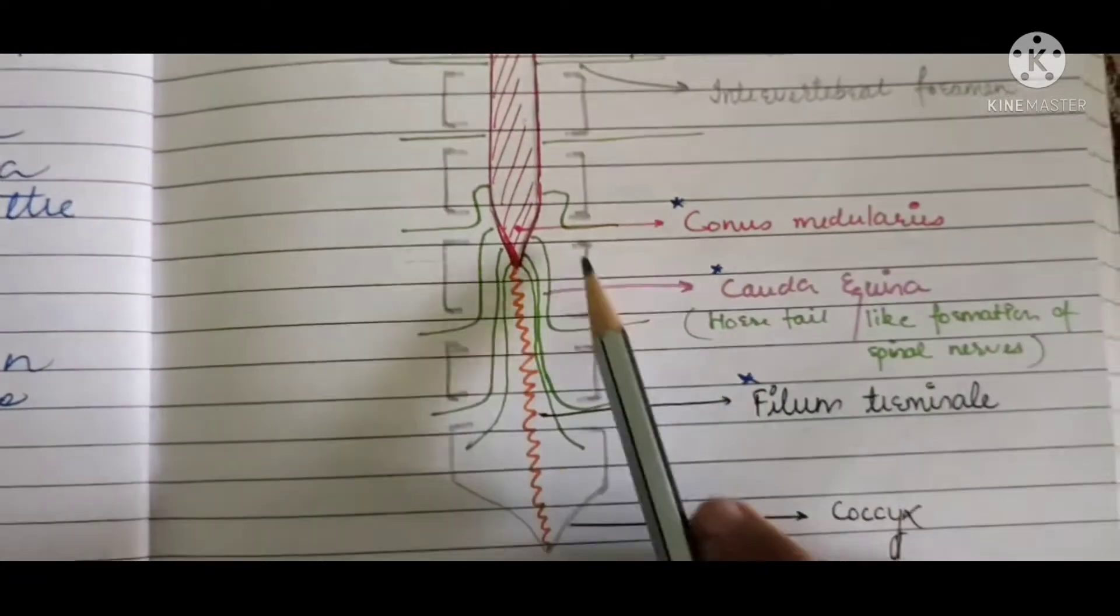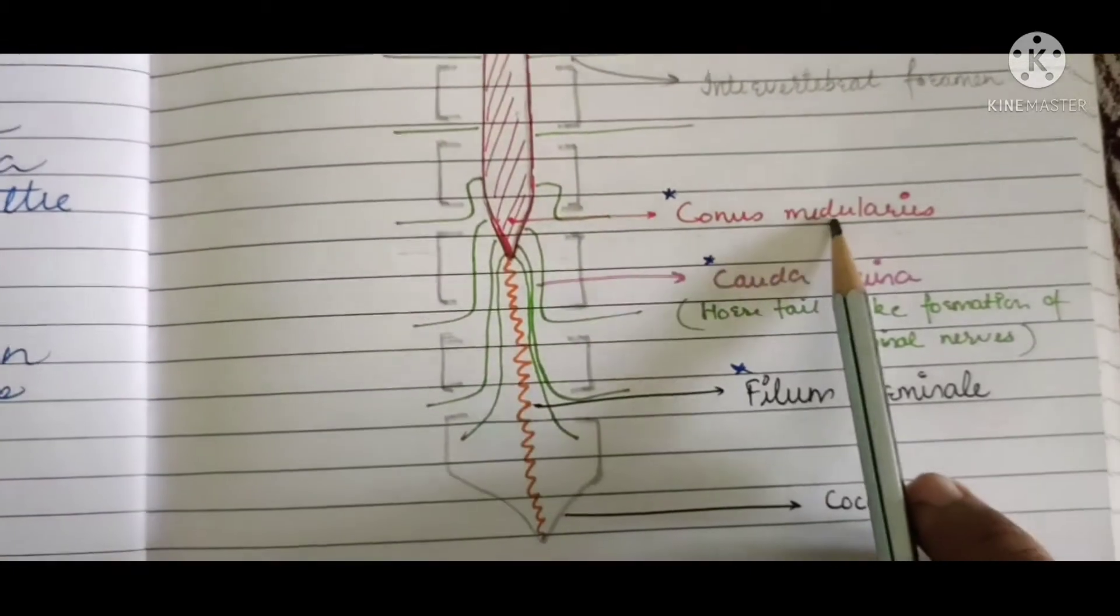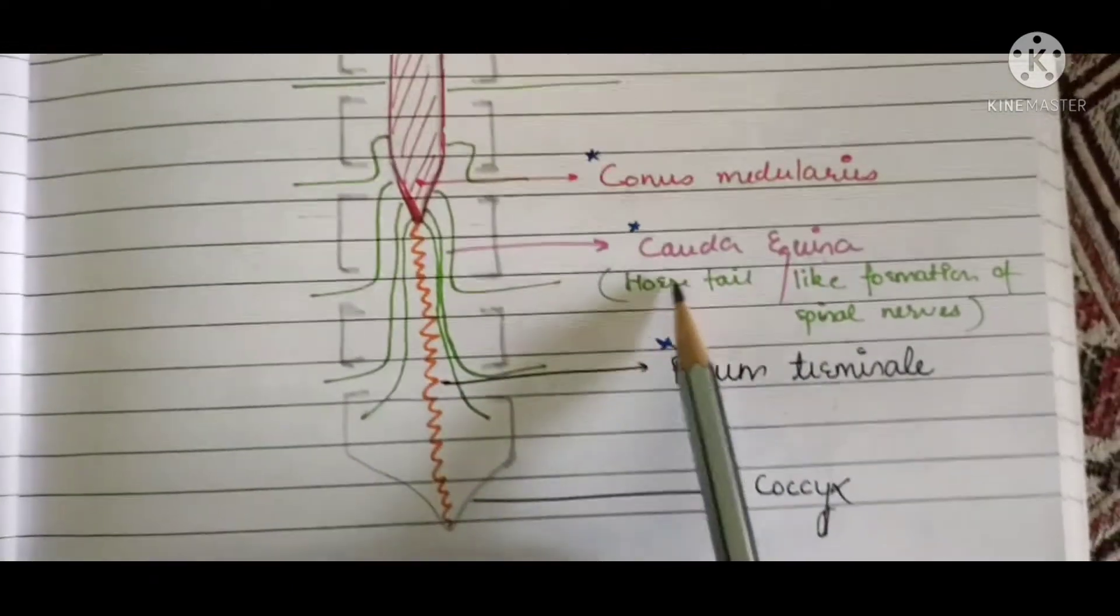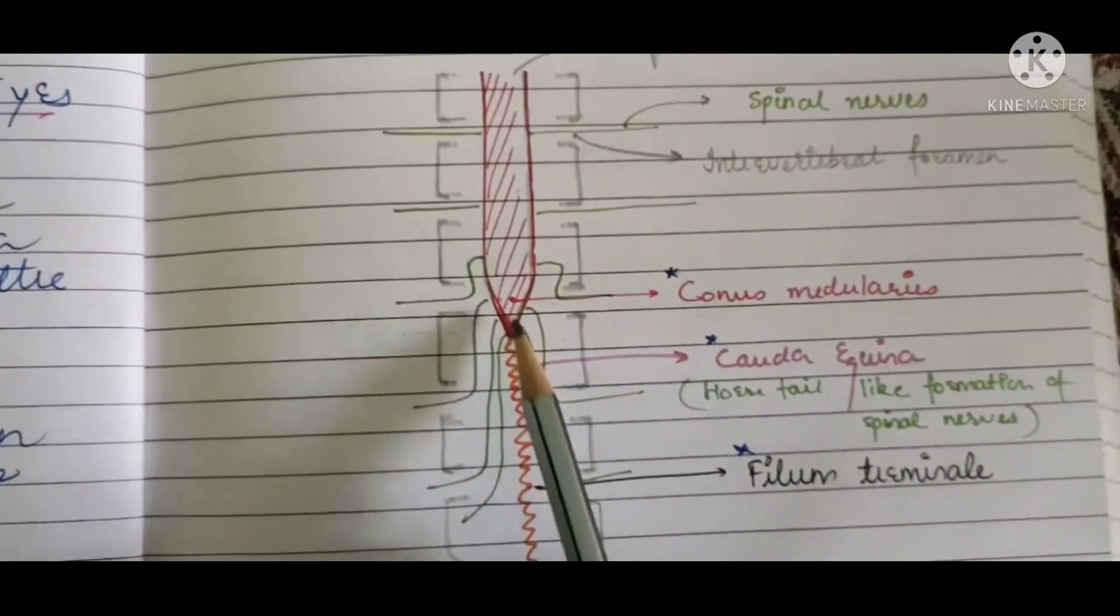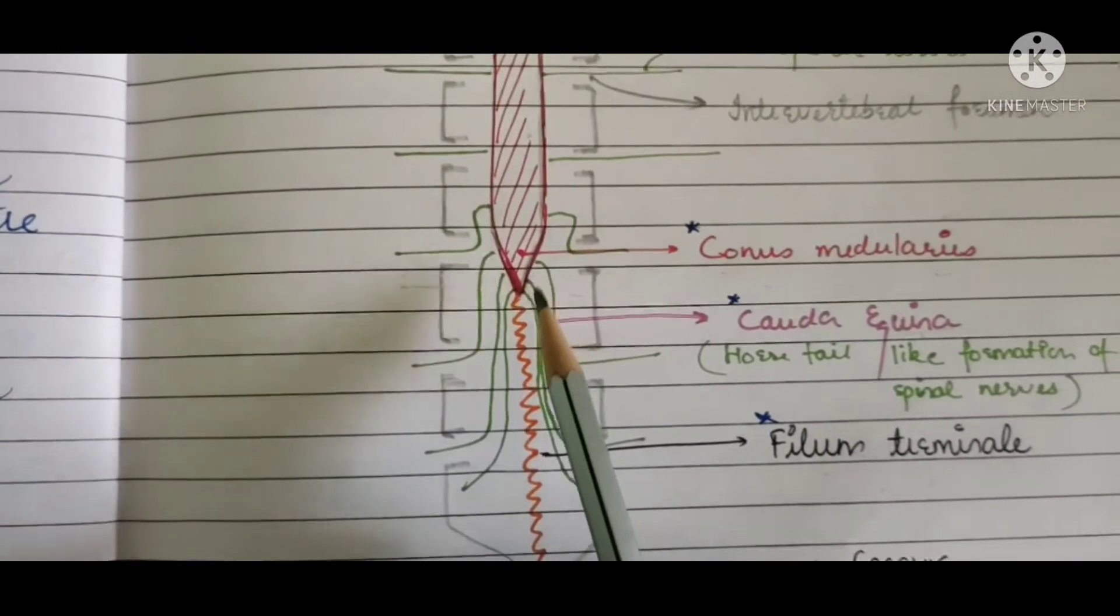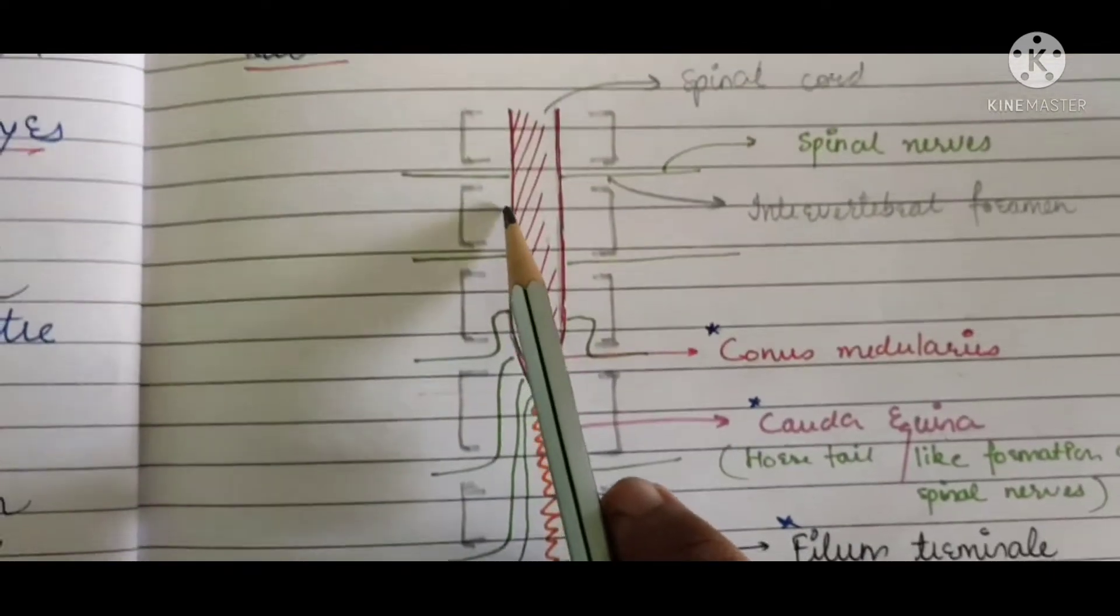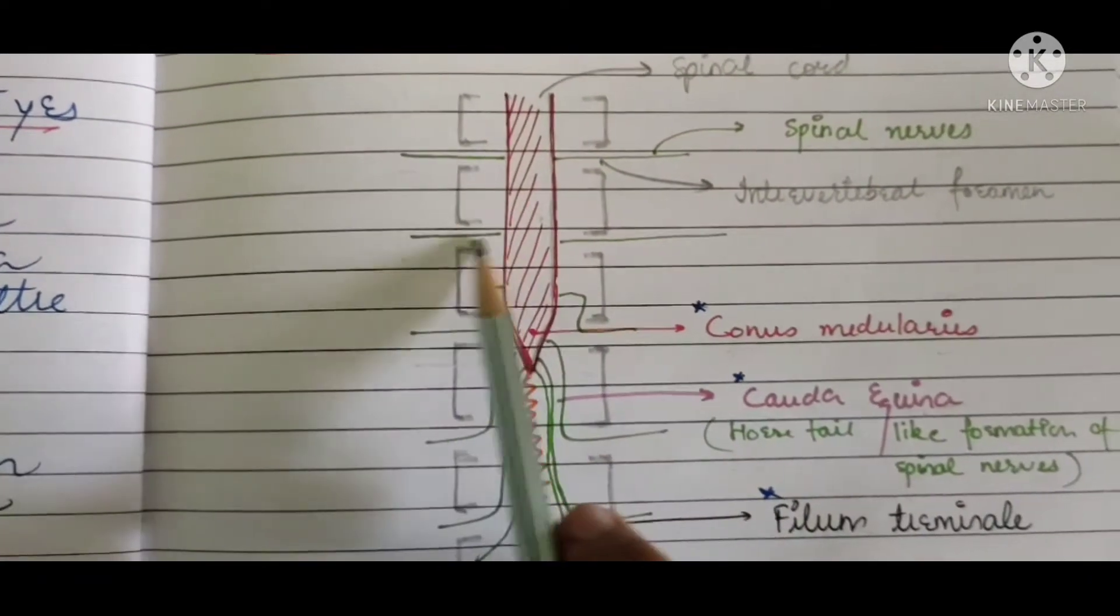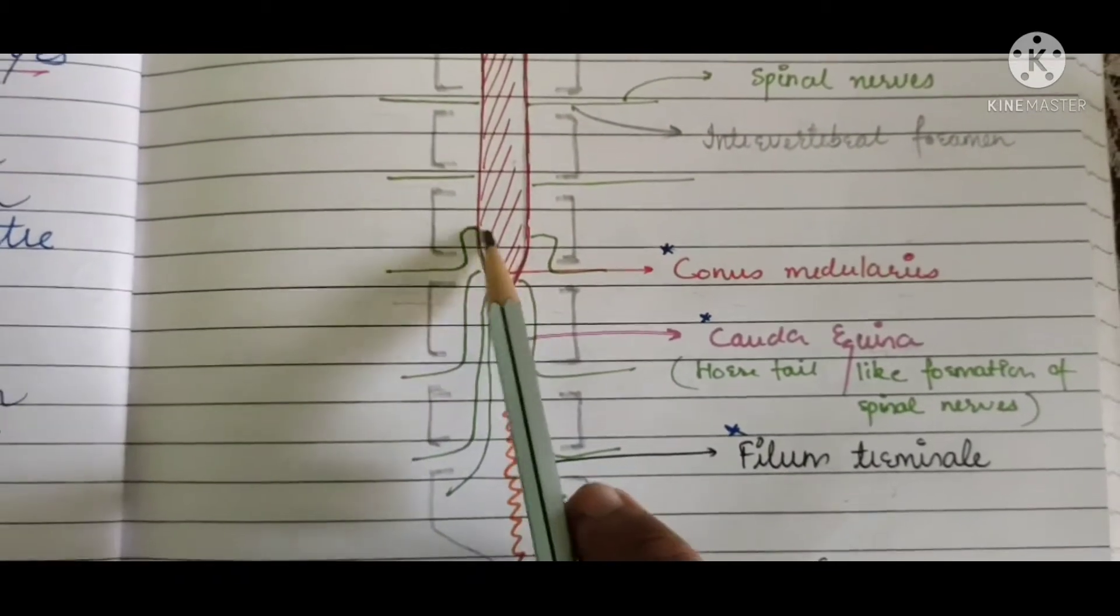Conus medullaris, we are done with the first terminology. Let's move on to the second terminology, that is cauda equina. So what does this mean? When the spinal cord has ended at the level of L1-L2 vertebra, the spinal nerves which were arising individually when the spinal cord was continuing, like here from the intervertebral foramen.